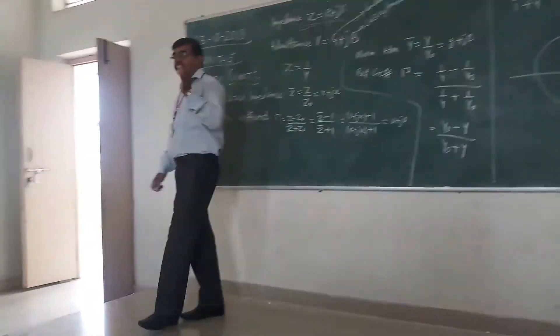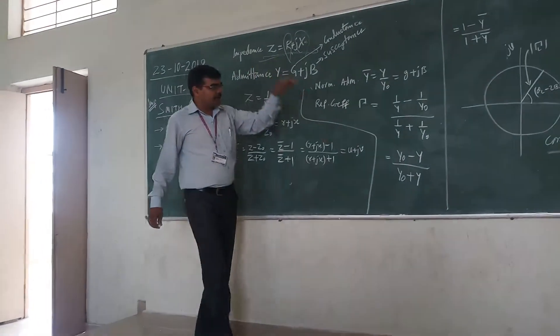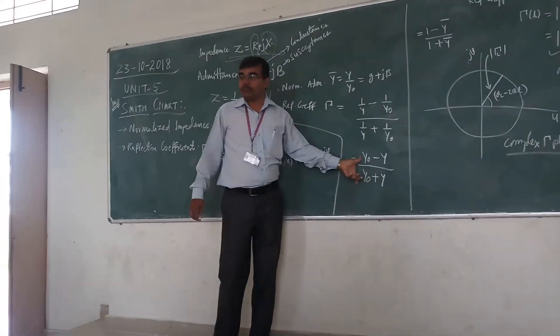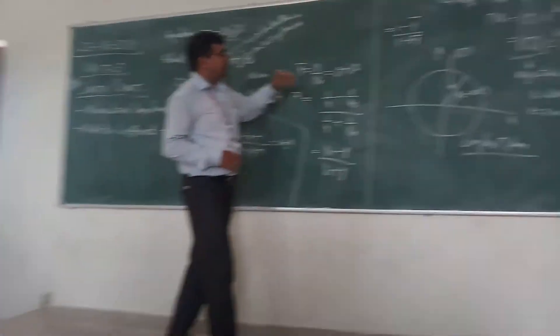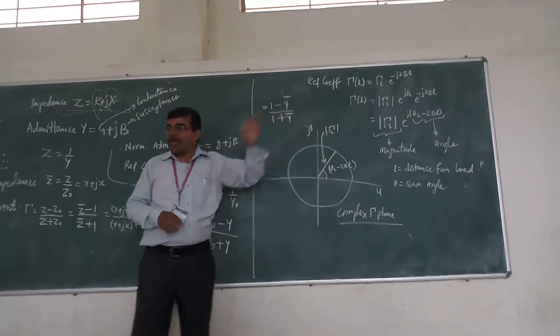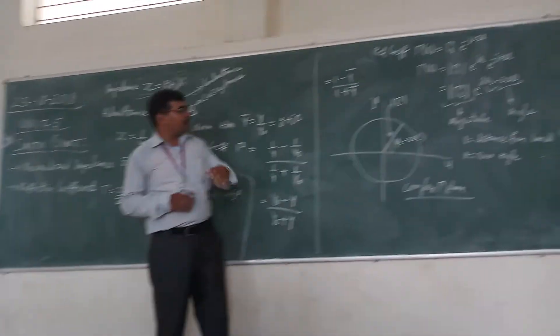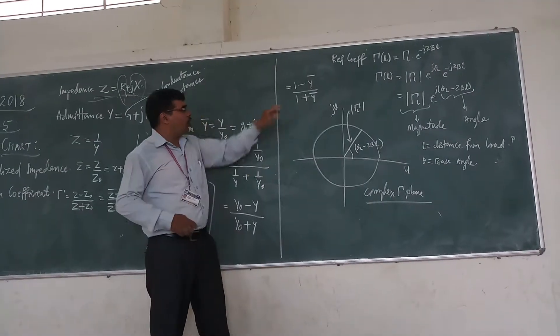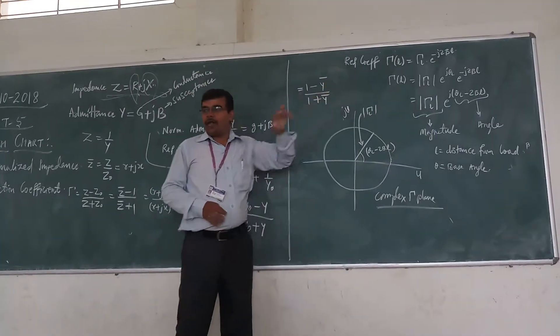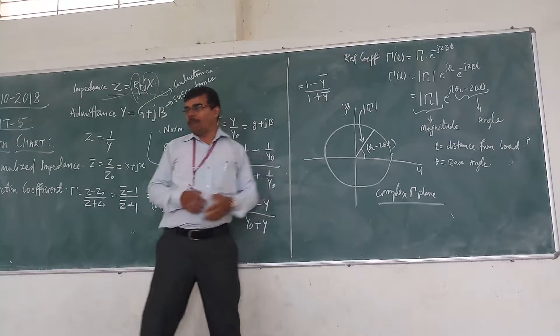So, the reflection coefficient in terms of admittance, you have this expression. We can find the reflection coefficient in terms of normalized admittance. In terms of normalized admittance, it is 1 minus Y-bar divided by 1 plus Y-bar.